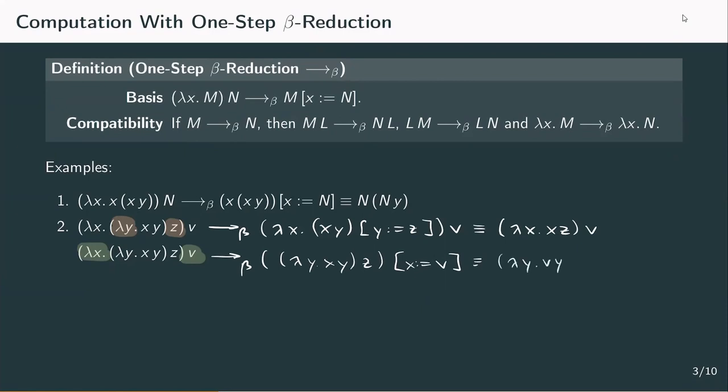Both terms contain another redex which we can reduce, and they both reduce to the same term vz. This raises a few questions: is it always the case that we reach the same term no matter what the order? Or does it matter in what order we reduce something? And does a reduction always end somewhere? We're going to answer the first question later in the video. The last question about never-ending reductions will be answered with a third and last example.